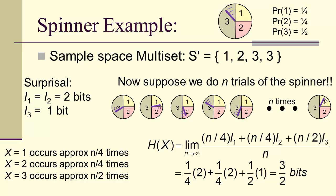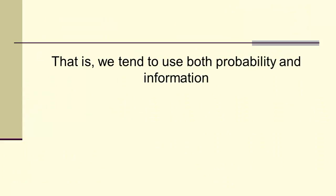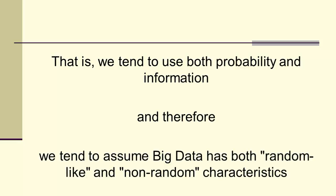Let me put it all together. We tend to use probability and information. And therefore, we tend to assume big data has random-like properties, even if it's completely non-random, simply because we'll be using proportions, relative frequencies, probabilities, at least in the relationship that we have those things to information.